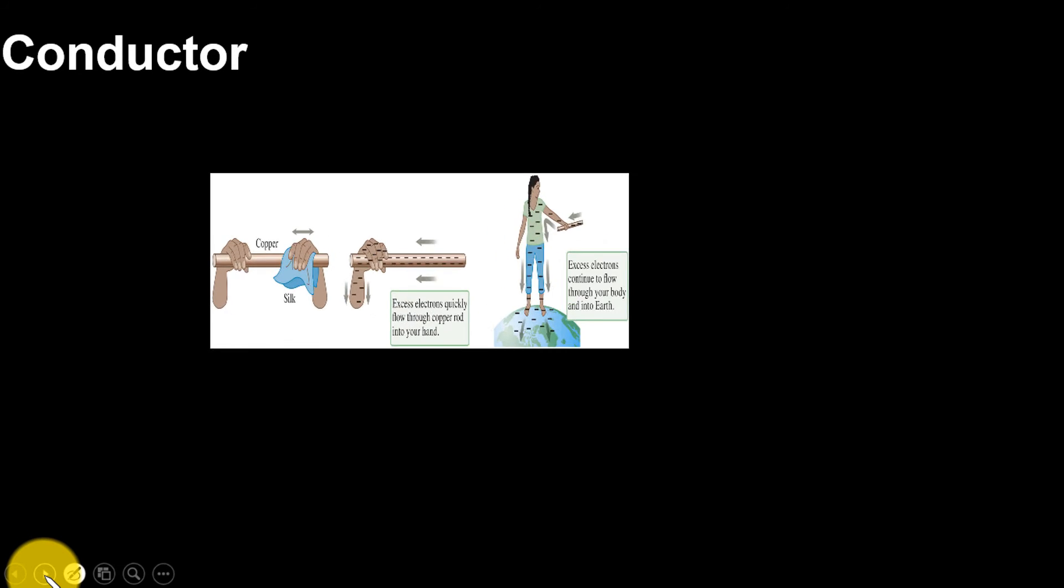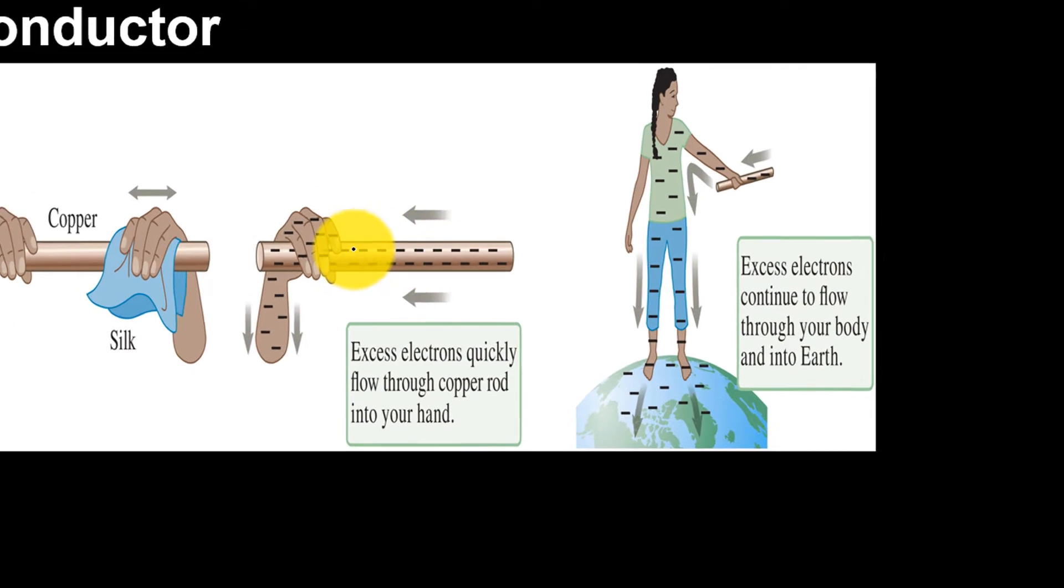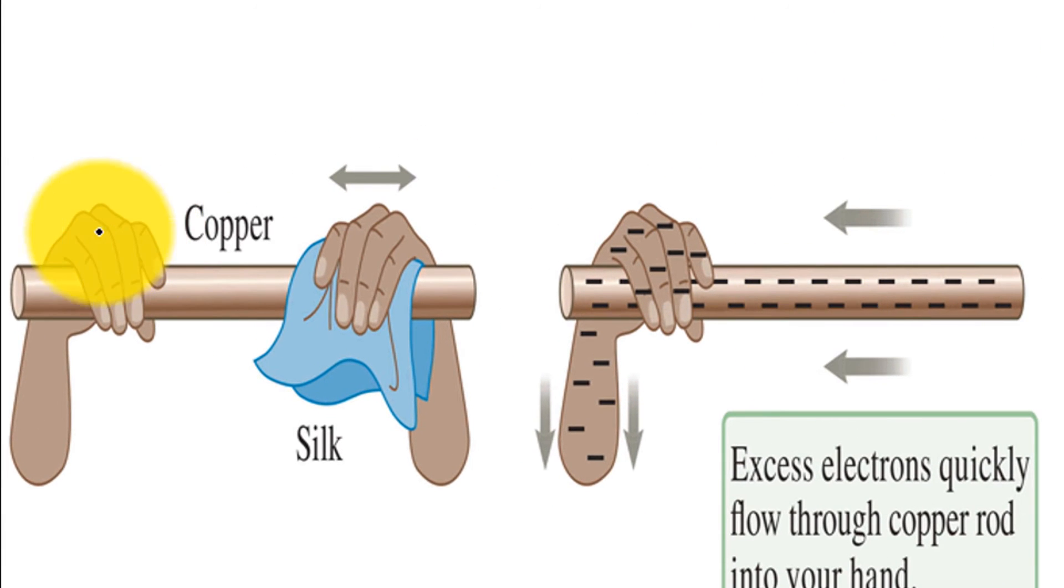Now consider the case of conductor. In conductors, charged particles, usually electrons, can flow freely. When you hold one end of a copper rod and rub the other end with silk, electrons are transferred from silk to the copper rod. And these excess electrons are free to flow. Because like charges repel each other, therefore electrons move away from one another, which means they travel through the rod into your hand.